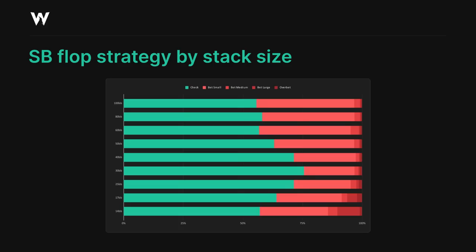This makes sense, since the small blind's range in a limped pot at these stack sizes will be weaker overall. In general, the small blind is rarely using any kind of large bet sizings, mostly because there's a very limited degree of asymmetry between the ranges which they can leverage. They have a very wide range and so does the big blind, so small bets are by far the most common option on the flop.